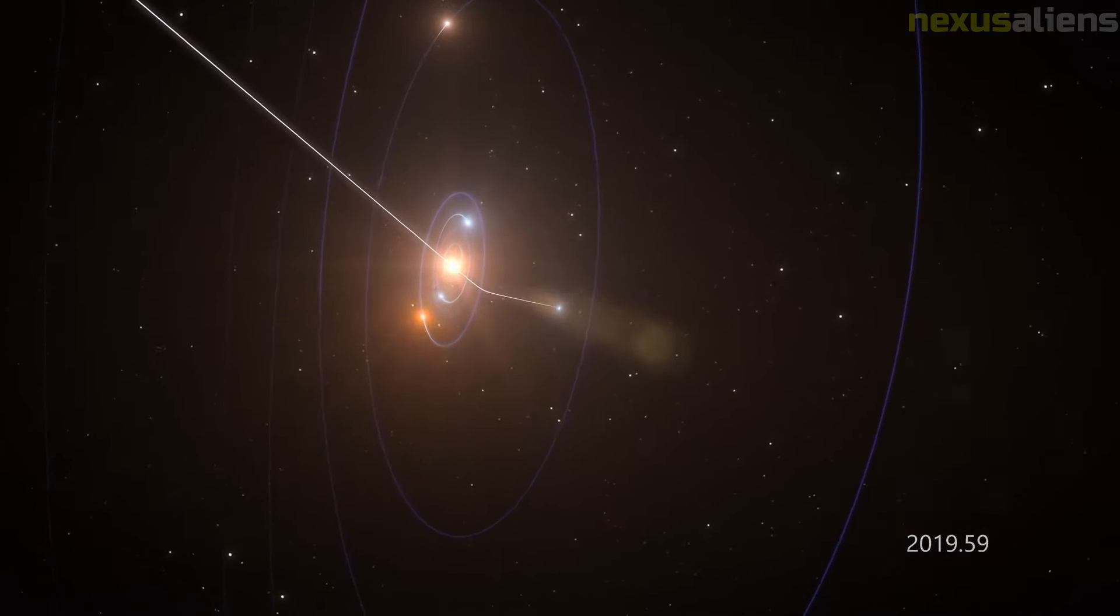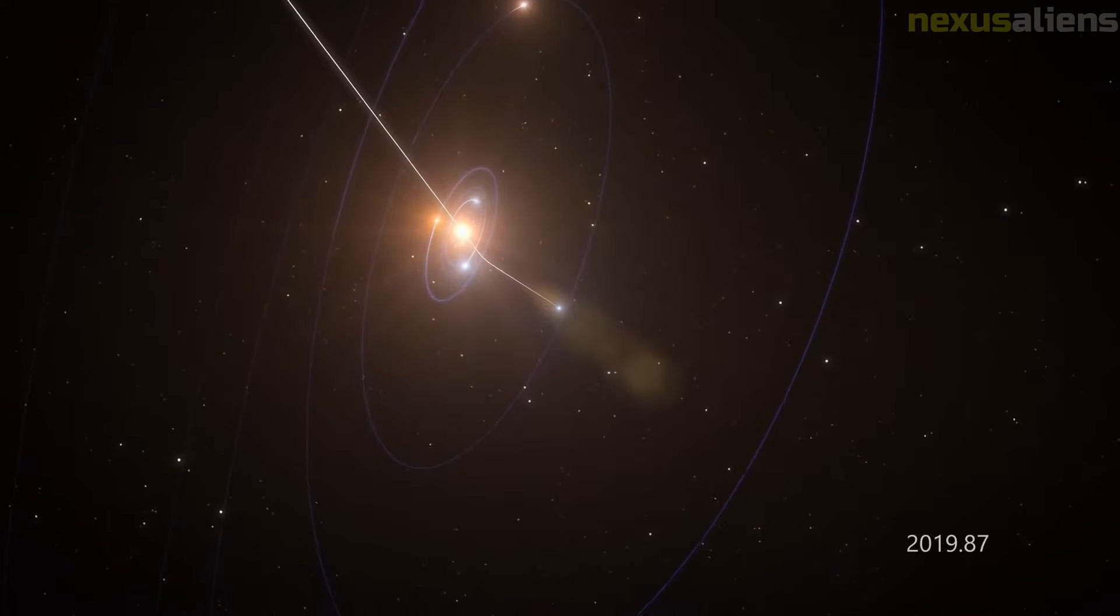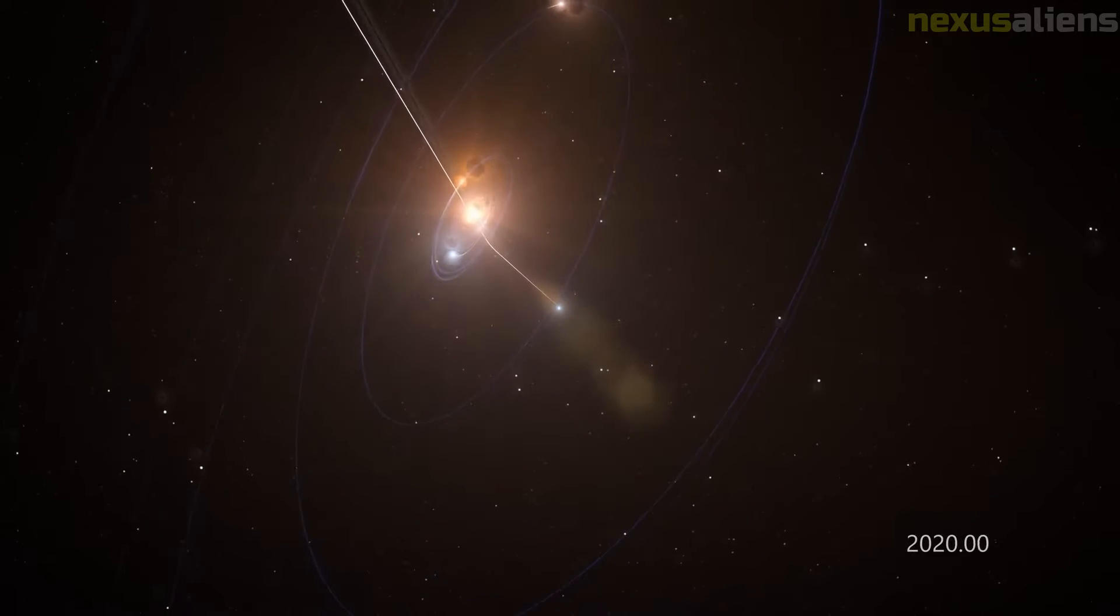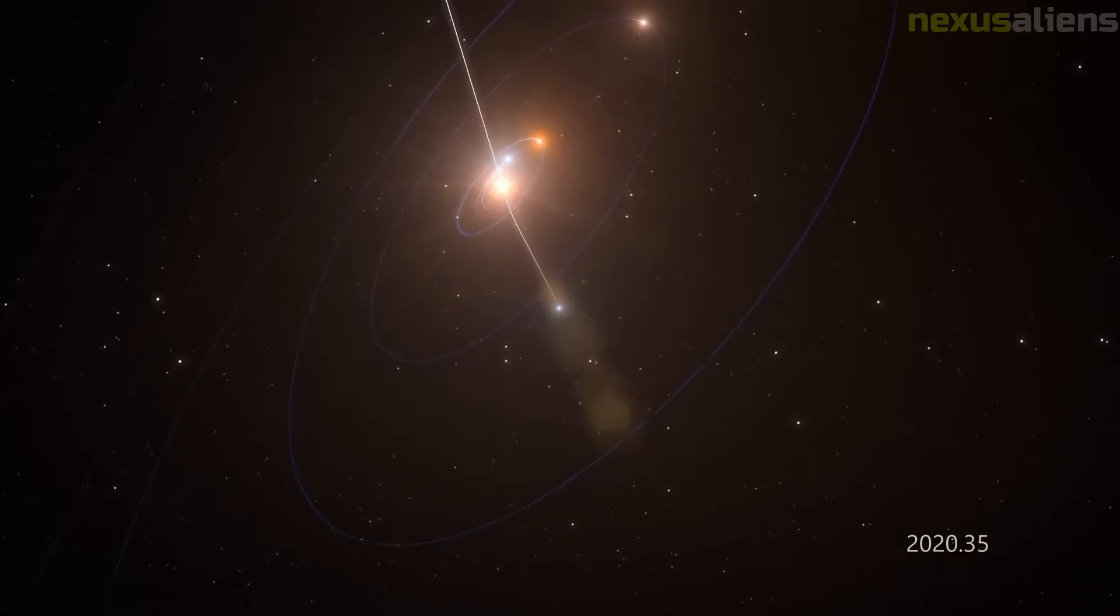It is unknown how long the object has been traveling among the stars. The solar system is likely the first planetary system that Oumuamua has closely encountered since being ejected from its birth star system, potentially several billion years ago.